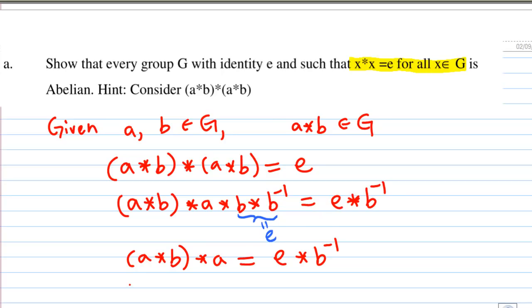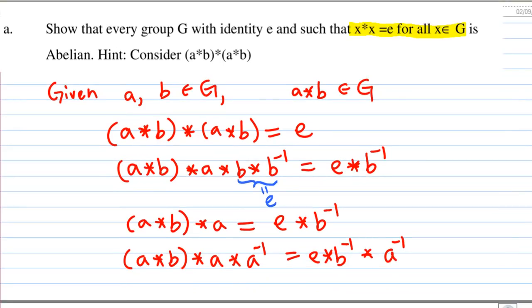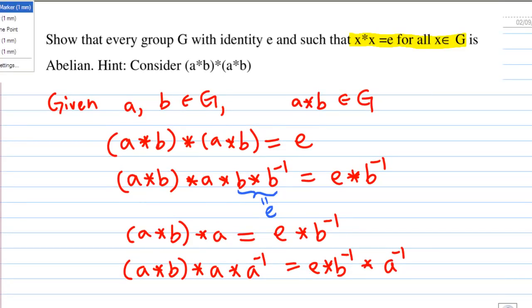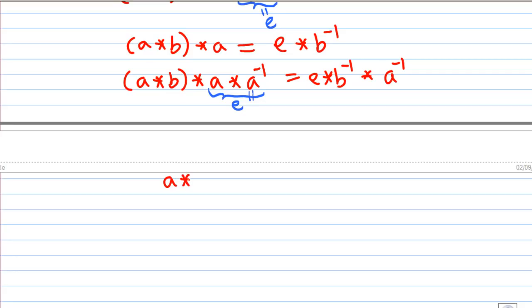Now I multiply again on the right by a inverse. So I get e times b inverse times a inverse. Again, a times a inverse is the identity. On the left hand side, I actually have a times b. On the right hand side, I get e times b inverse times a inverse.